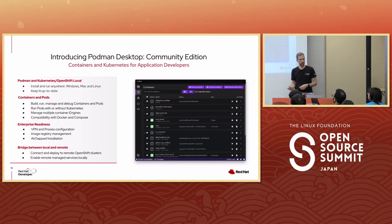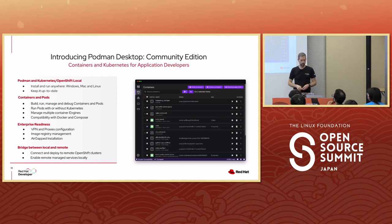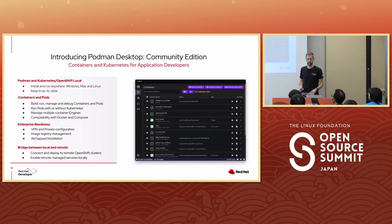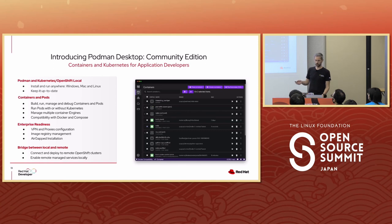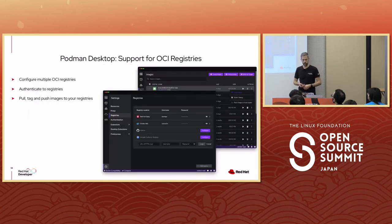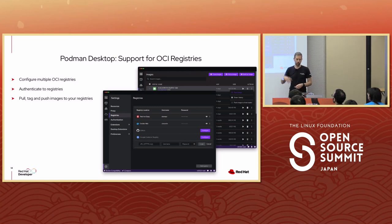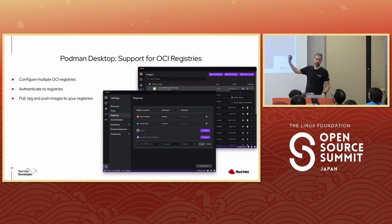With Podman Desktop, it tries to make that easier with a nice UI that allows you to do different things like building containers, running containers, creating pods, and interacting with Kubernetes and creating Kubernetes resources. It has support for OCI registries — Docker Hub, Quay.io, GitHub registry, your local registry, your private registry.